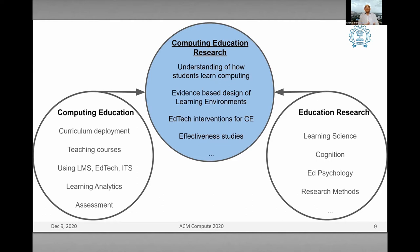Computing education research brings education research ideas into CS topics and courses. A primary requirement is to understand how students learn computing — where are the misconceptions, why do they have them. Then there are areas of designing learning environments — whether classroom or online — based on evidence, not simply on intuition. We can also create EdTech interventions for computing education at college or school level. All of this is driven by effectiveness studies and evolving theories of how learning happens.